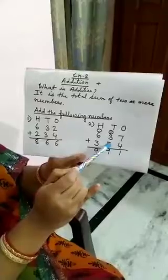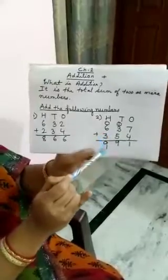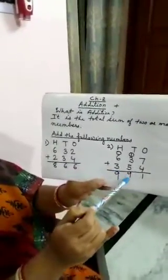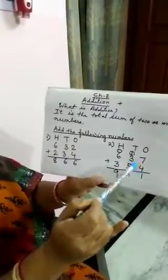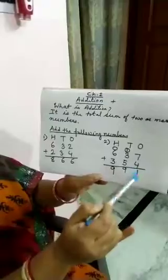3 plus 5, 8. 8 plus 1, 9. 6 plus 3, 9. So your answer is 991. So see the sum of 2 or more numbers is addition.